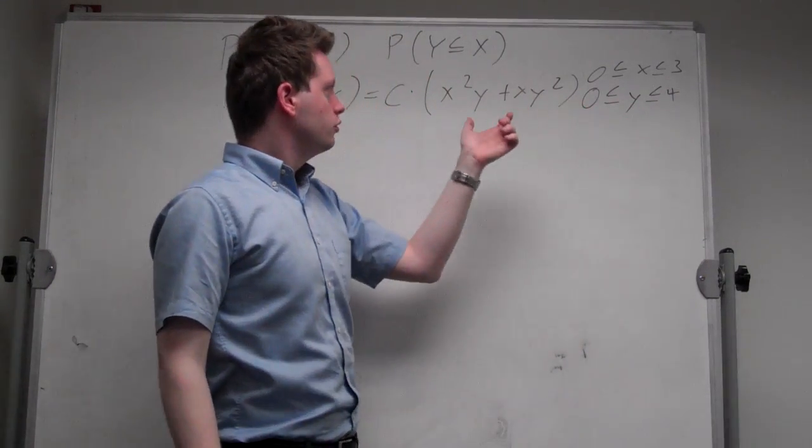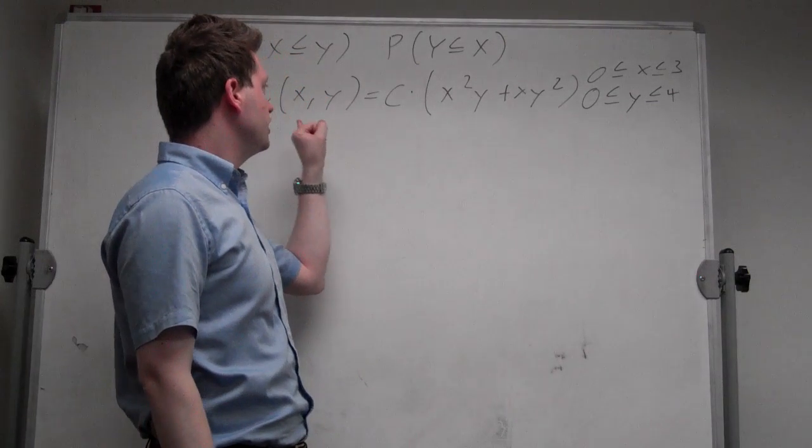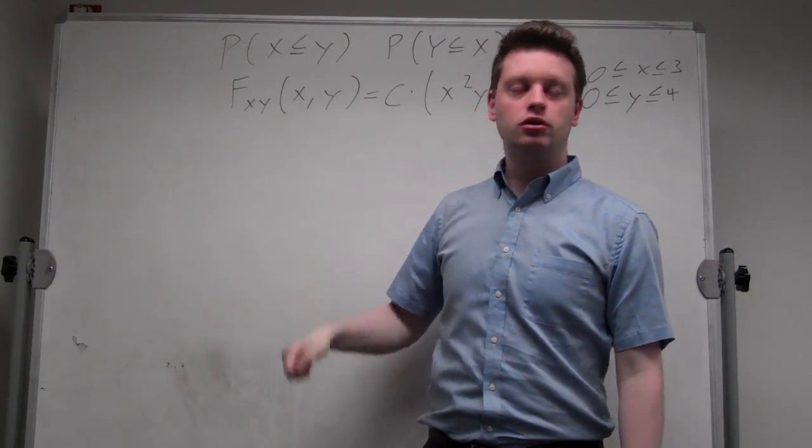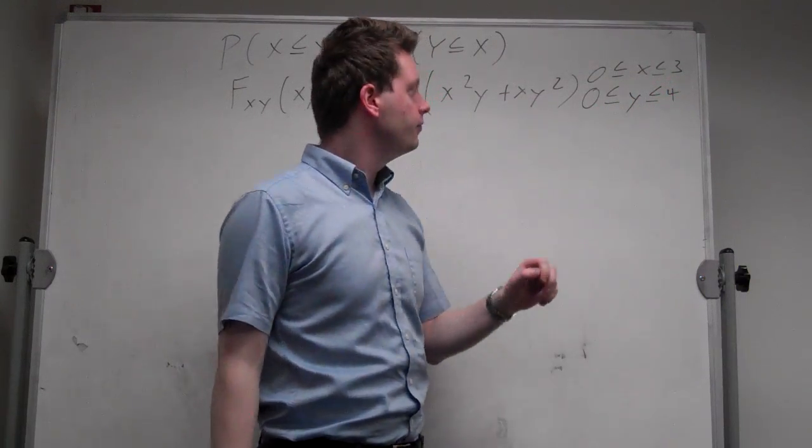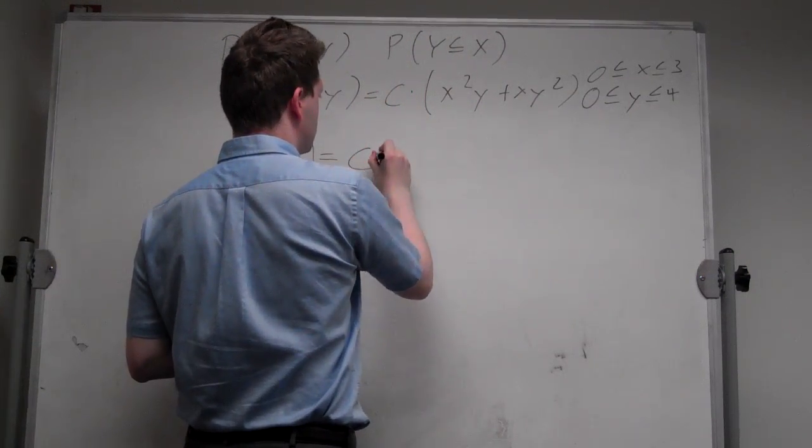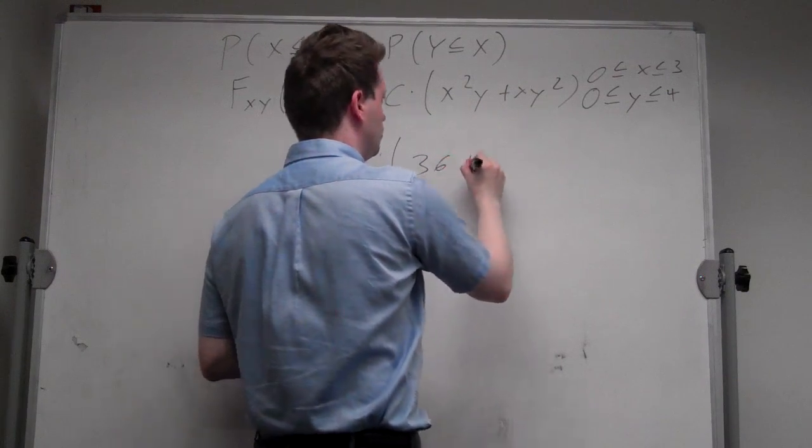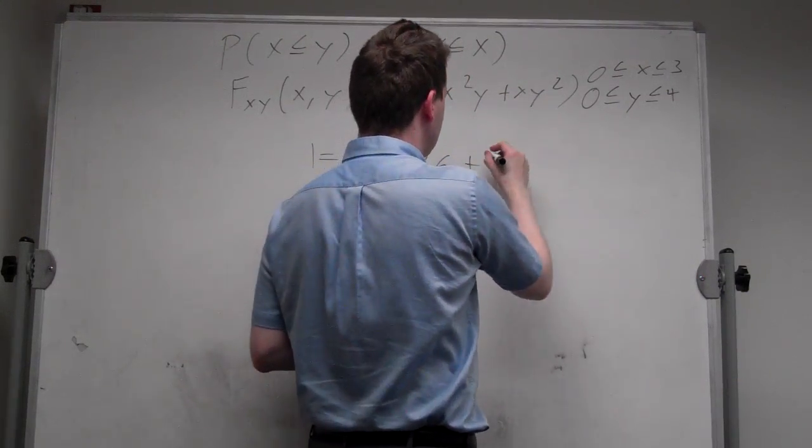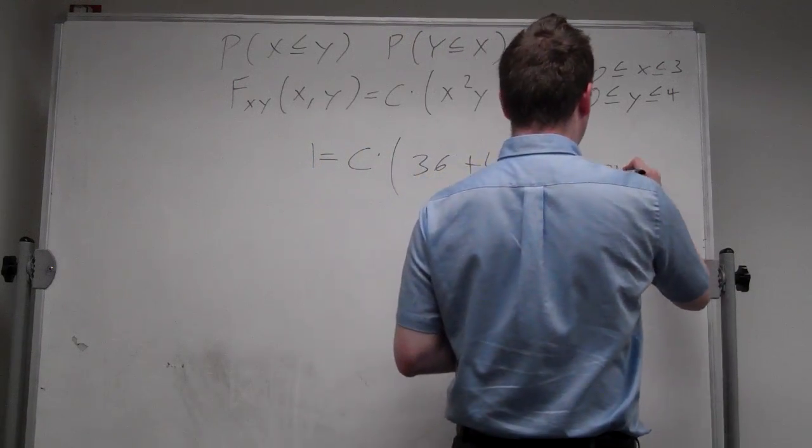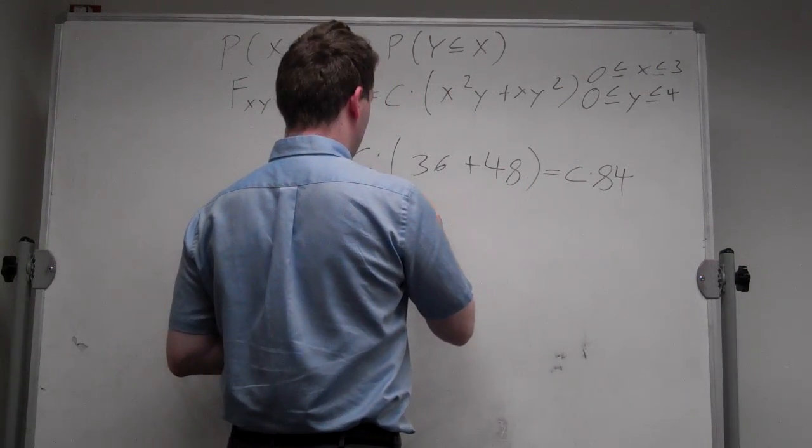Now, given these bounds, together with this function, we can figure out what this constant c has to be. In particular, we know that since this is the cumulative distribution function, if x and y are at the upper bound, so 3 and 4 respectively, the function value has to be equal to 1. So let's plug that in. 1 is equal to c times, now x squared is 9 times 4, which is 36, plus 3 times 16 is 48, which is equal to c times 84. But that immediately means that c is equal to 1 over 84.